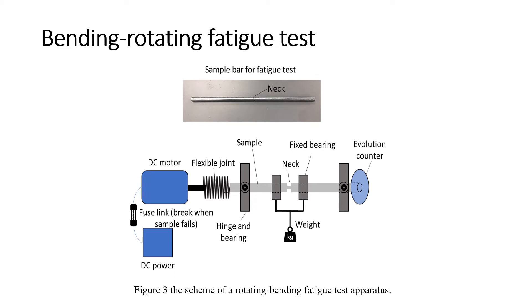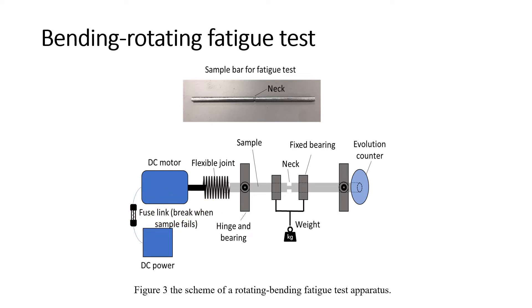The revolution counter at the end of the sample bar records the number of bar rotations during the test. Finally, a fuse link between the DC motor and the power supply provides a safety function, which will break when the sample fails.